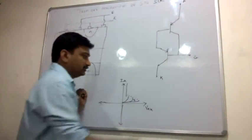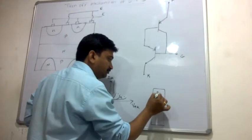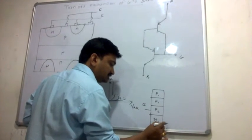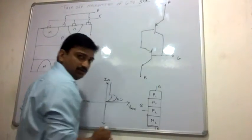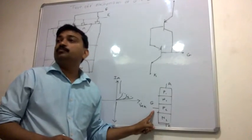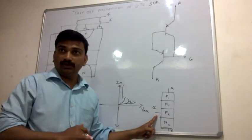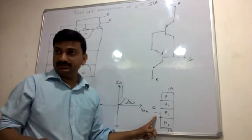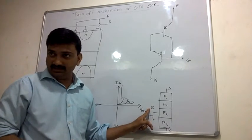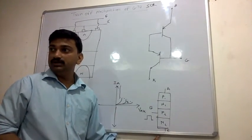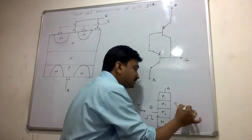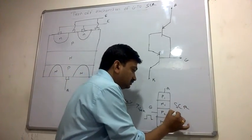So what is the difference between the Gate Turn Off SCR and the normal SCR? The normal SCR has a P1 N1 P2 N2 structure with a gate terminal, cathode terminal, and anode terminal. In a normal SCR, you require a positive pulse to the gate to turn it on. Once it is turned on, there is no effect of gate current or gate voltage on the conducting SCR. If you provide a negative pulse for turn off, it will not work — it is not possible to turn off a normal SCR with a gate pulse.